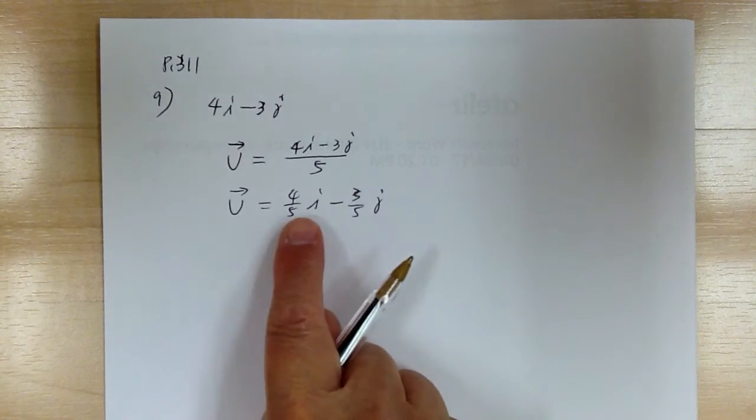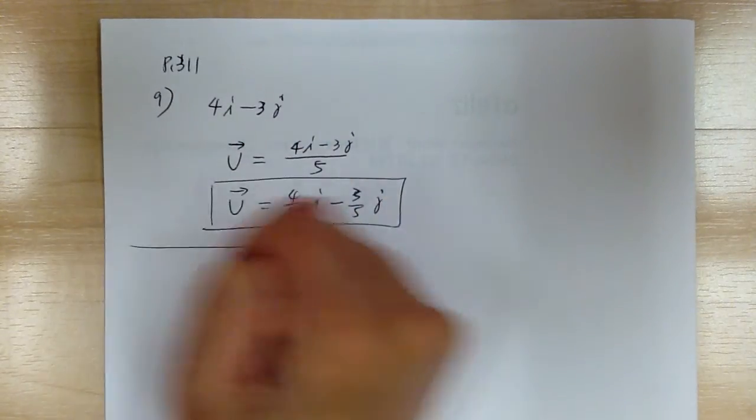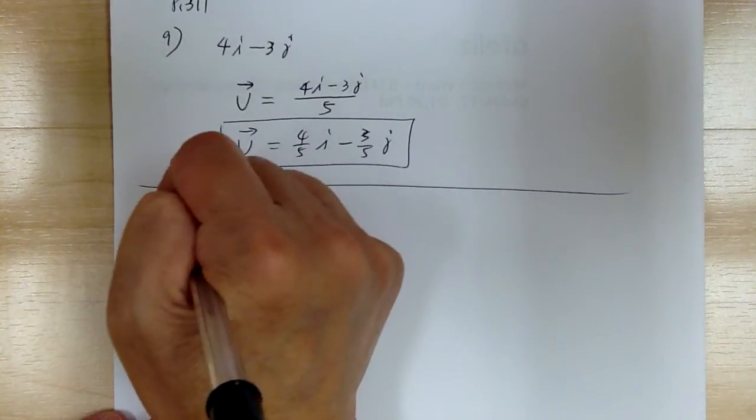And make sure you always write the ij form in this form. And that's it. Let's go to number 13.